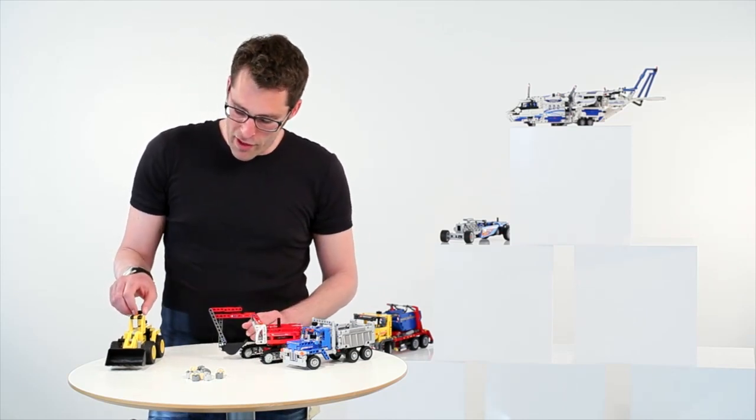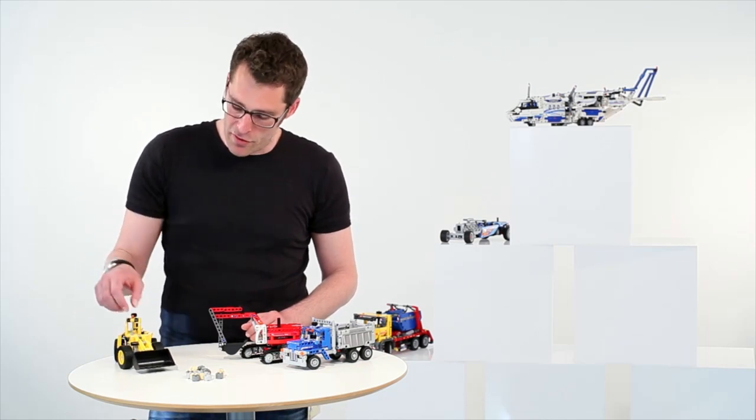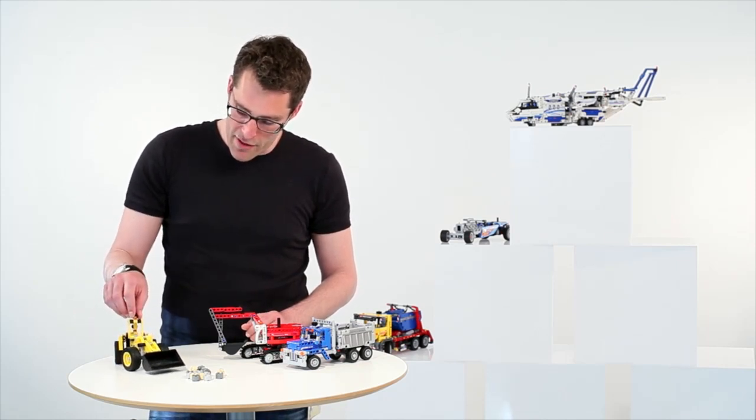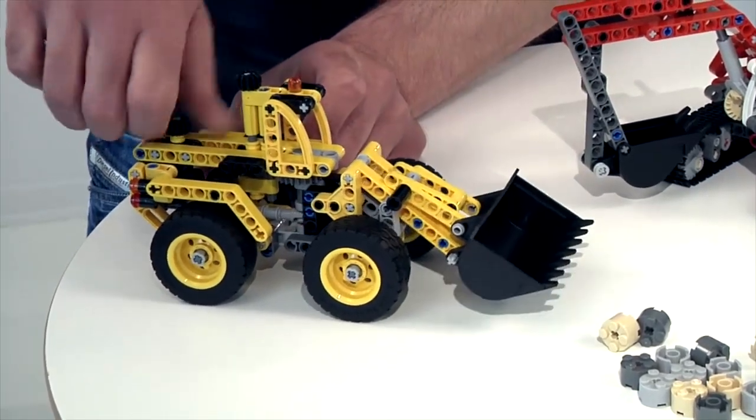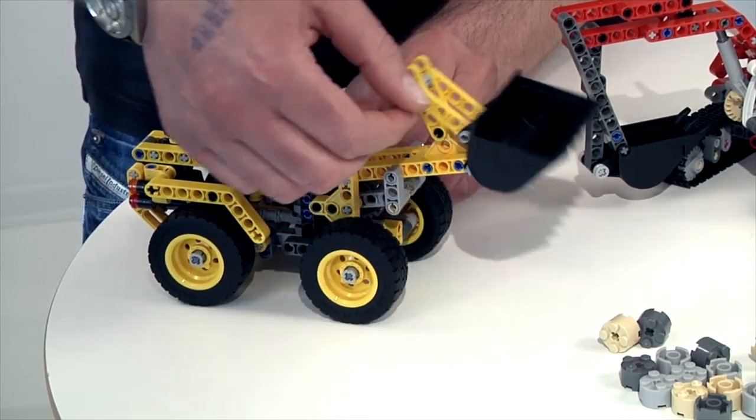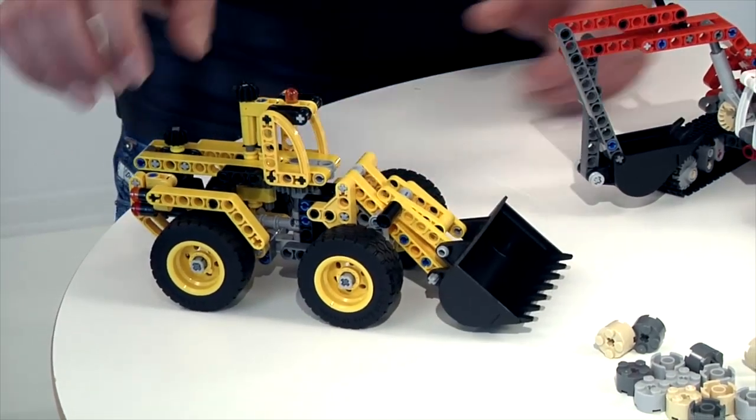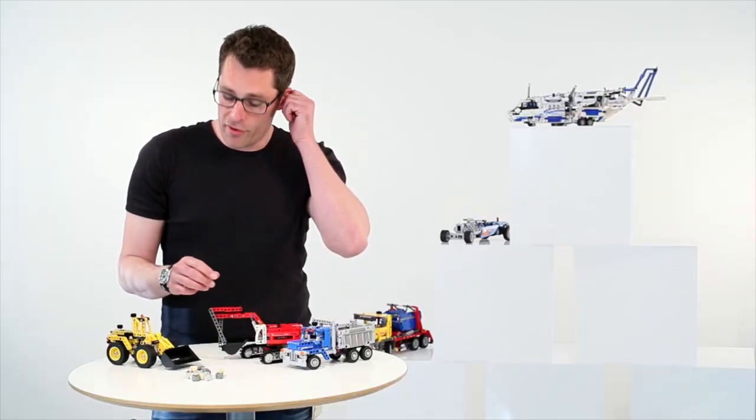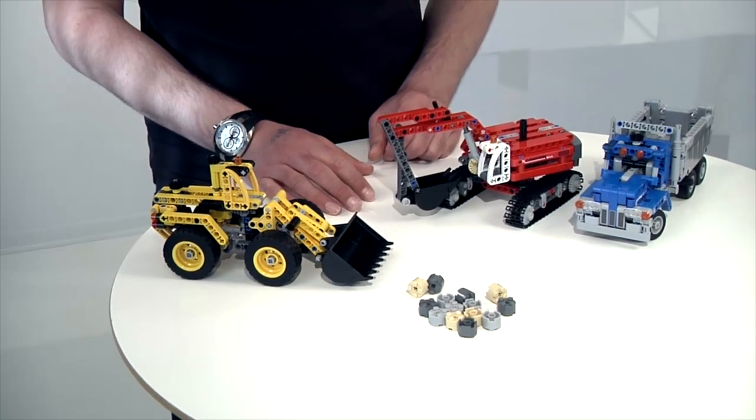The third model, the wheel loader, which also incorporates the new tire that we developed for this assortment, the medium truck tire. Has articulated steering. You can raise and lower the boomer in the front. And you can also tip the shovel. So it also has a lot of functionalities. So all these models can actually play with these bricks that we put into the box also. So really a good playset for the 8 year old.